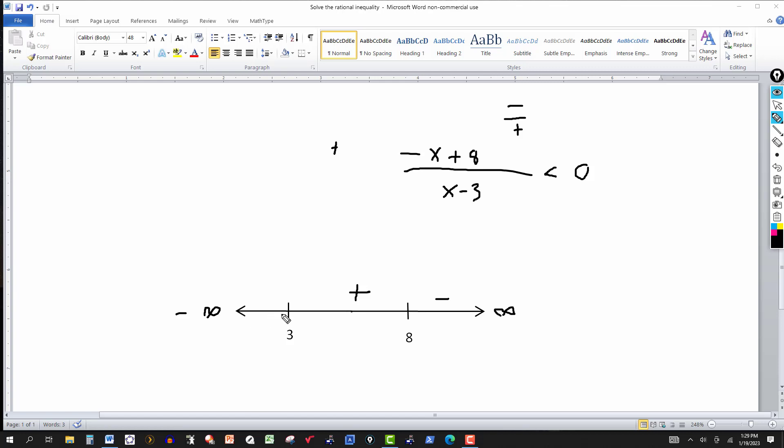And then over here to the left of 3, we can pick anything smaller than 3. We can pick 2, 1. I'm going to pick 0. Put a 0 as long as it's less than 3. You can go from 3 to negative infinity. Put a 0 there: that's 8, 0 there, that's a negative. Positive 8 divided by negative 3 is a negative, so this is negative.